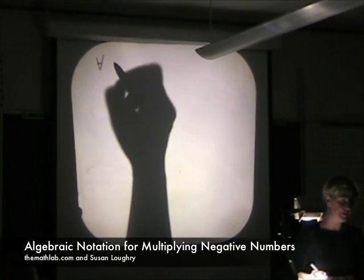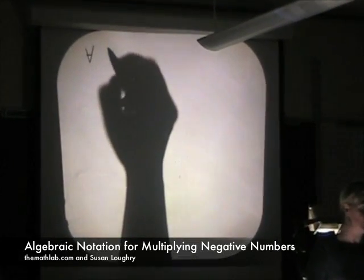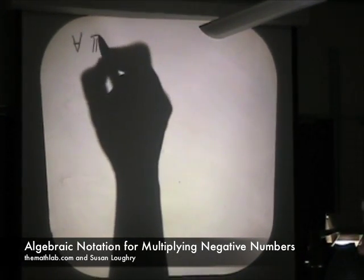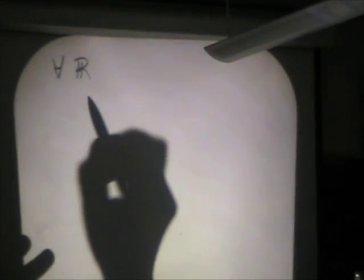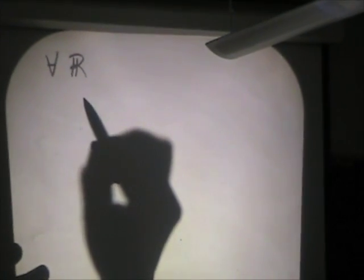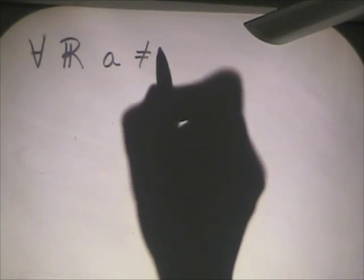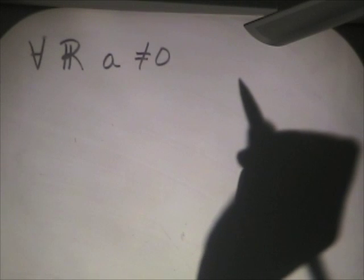For all real numbers — the fancy R means real numbers, so that means every number you've ever seen in your life — we're going to call them A. There's one little condition: A can't be equal to zero, because zero is neither positive nor negative, it's neutral.